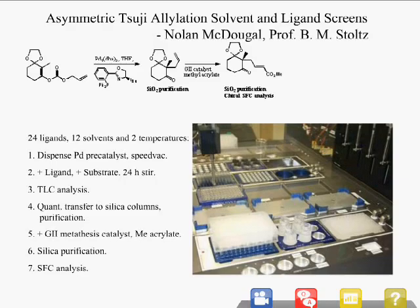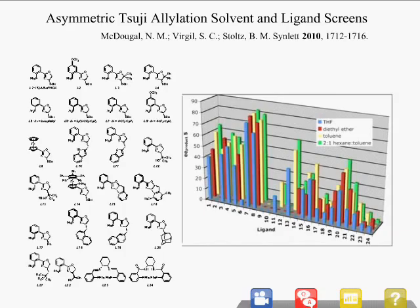The results show a complete list of 24 ligands — variations on the FOX ligand used by the Stoltz group, plus commercial ligands and ligands from other groups. We ran the screen in two levels: first checking temperatures, different ligands, and different solvents, then narrowing down to four solvents that worked best: THF, ethyl ether, toluene, and 2-to-1 hexane-toluene. The best conditions were with two particular ligands, 7 and 8, using toluene and 2-to-1 hexane-toluene.